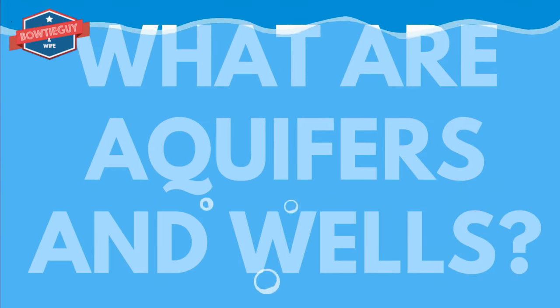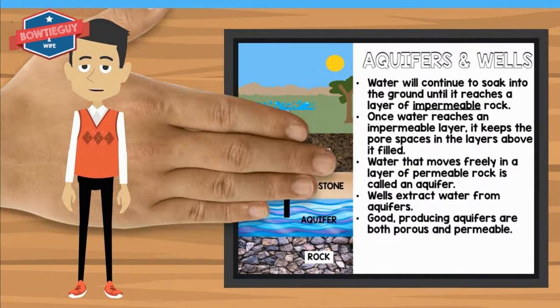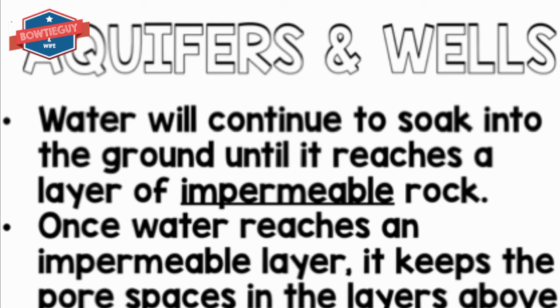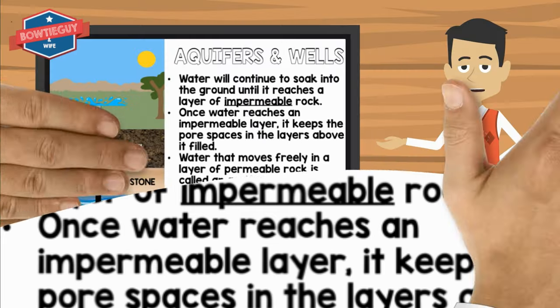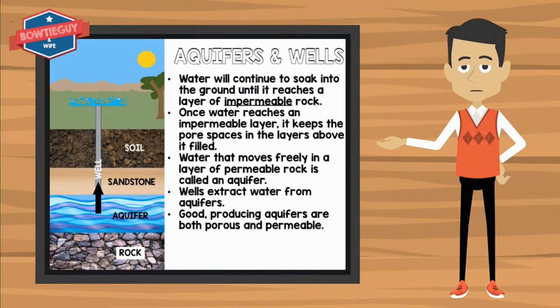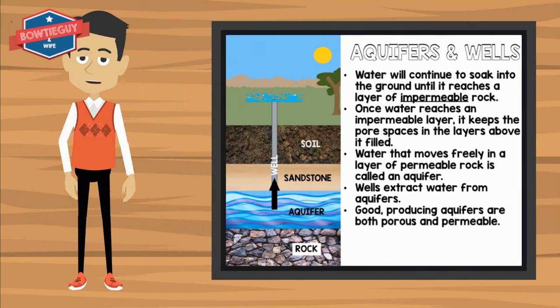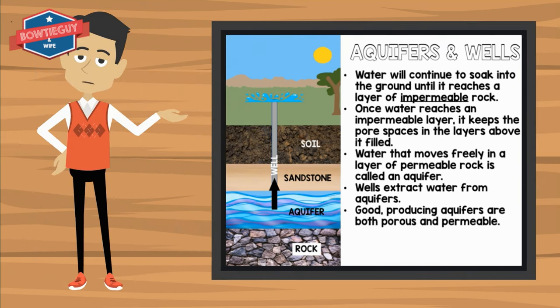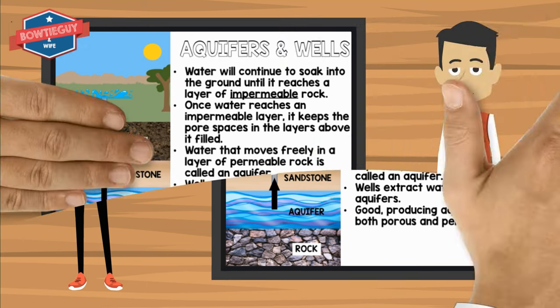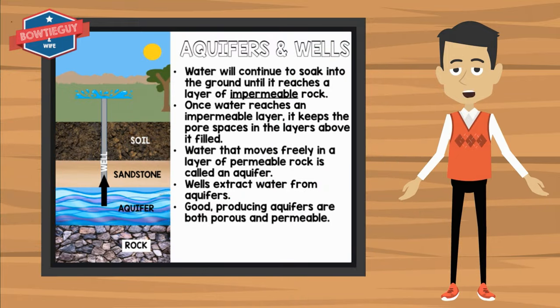What are aquifers and wells? Water will continue to soak into the ground until it reaches a layer of impermeable rock. Once water reaches an impermeable layer, it keeps the pore spaces in the layers above it filled. Water that moves freely in a layer of permeable rock is called an aquifer. Wells extract water from aquifers. Good producing aquifers are both porous and permeable.